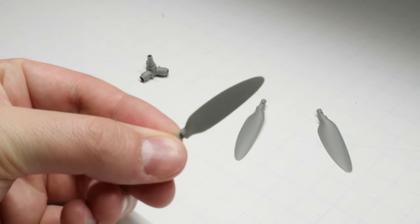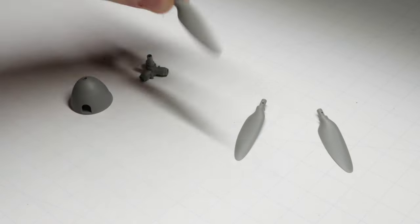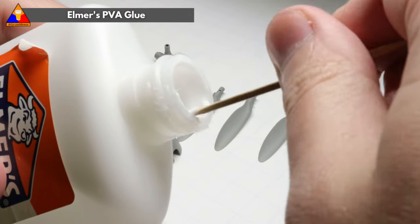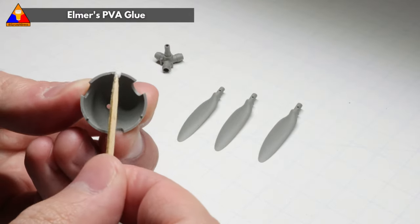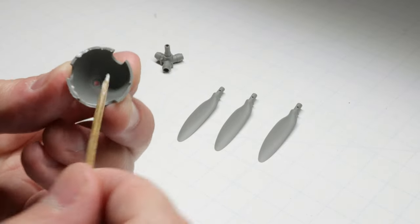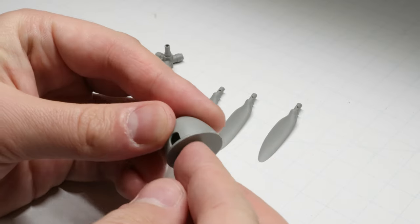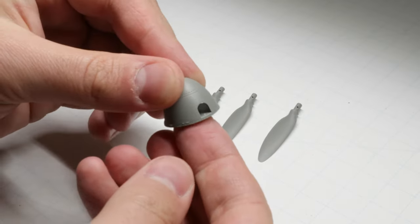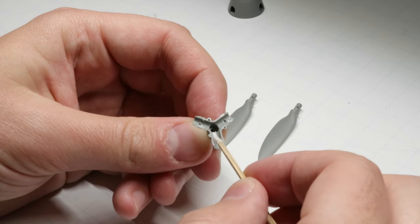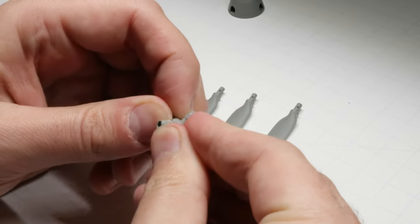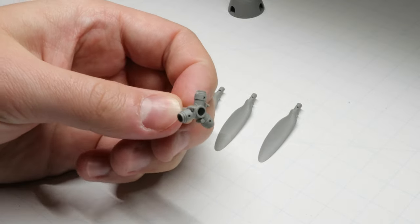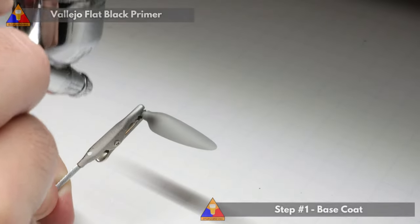We're going to want to temporarily assemble the spinner and prop hub so we can paint them together, so we'll use a little bit of Elmer's PVA glue to keep those parts together throughout the painting process. This bond can easily be broken after painting when it's time for the final assembly, which is exactly what we're looking for. With our parts prepped, we can move on to painting. First things first, we're going to base all of our parts with some flat black acrylic primer to give us a nice clean slate to work with.